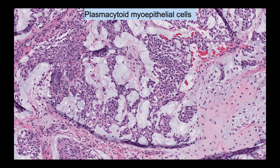This plasmacytoid morphology — some would say also rhabdoid — is a feature seen in many salivary gland tumors containing myoepithelial cells, including myoepithelial carcinomas, which can be morphologically similar to rhabdoid neoplasms. Again, note the background chondromyxoid stroma characteristic of pleomorphic adenoma, and how myoepithelial cells detach and merge with this stroma.